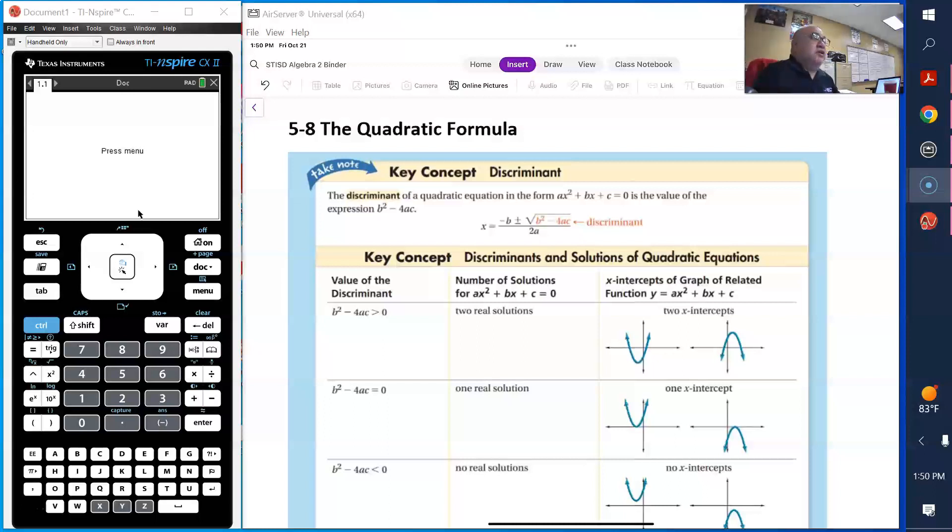Before we go into the quadratic formula, one of them is what is the meaning of the discriminant. And the discriminant is the expression that's underneath the radical, b squared minus 4ac. So it's b squared minus 4ac.